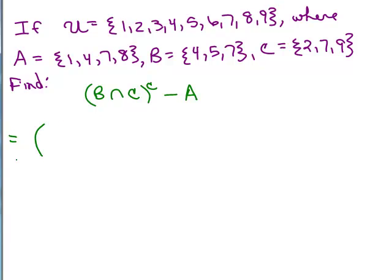All right, so let's see. We're going to do B intersect C, so I'm going to write what B intersect C is. I'm going to look at these two sets, B and C, and do they have any elements in common? Only a seven, so that's only seven.